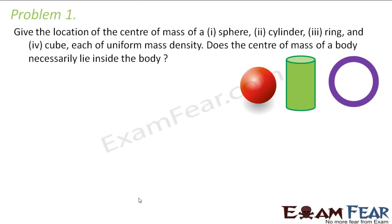Now keeping all these points in mind, let us try to calculate the location of center of mass for few objects. So let us look at problem 1. The problem says: give the location of the center of mass of a sphere, cylinder, ring and cube, each of uniform mass density. So uniform mass density plays the key role here.